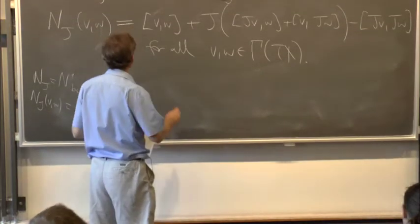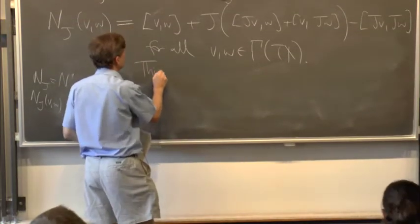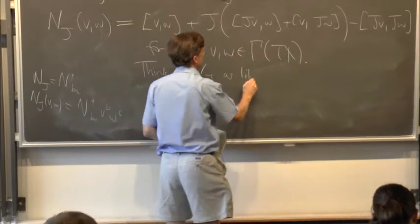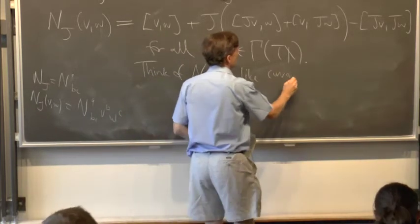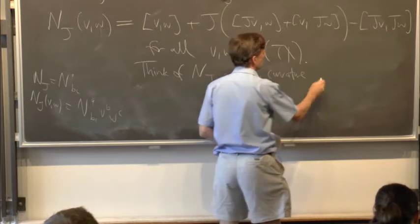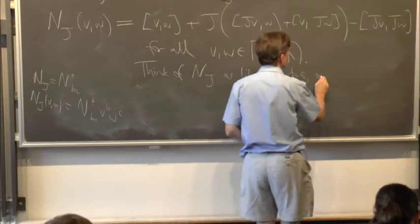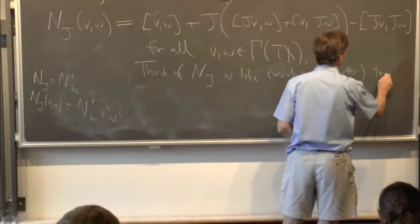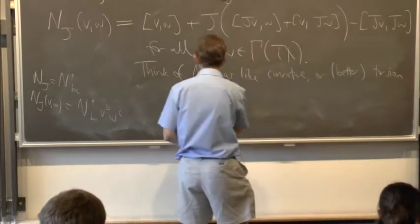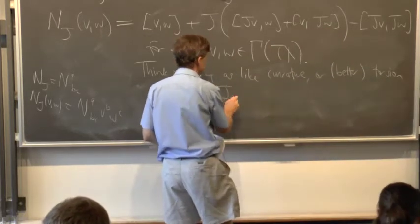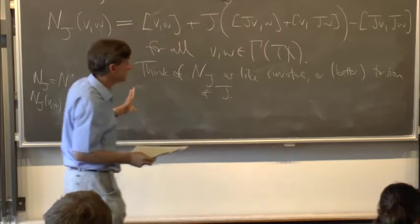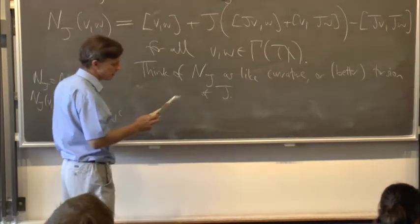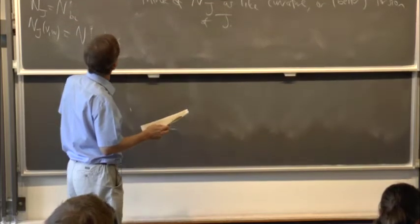This is a bit like the curvature depending only on the zeroth derivatives as a property of the defining expression. So you can think of N_J as a kind of curvature — but better, think of it as the torsion of J. In fact, it is literally the torsion of J in the sense of G-structures, GL_m(C)-structures.